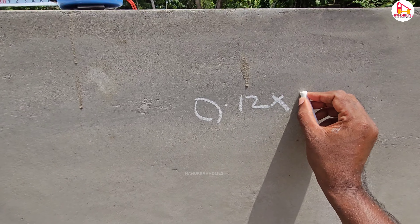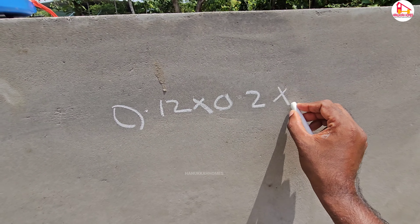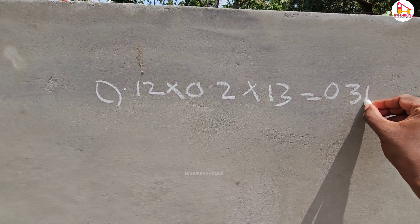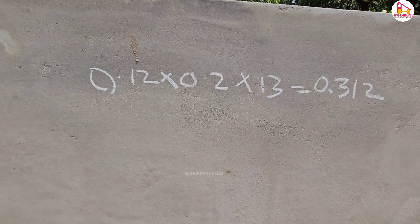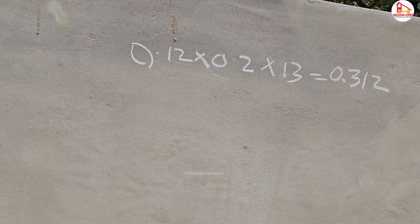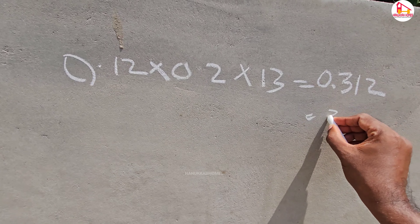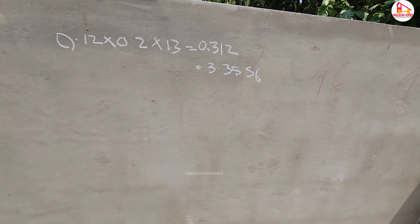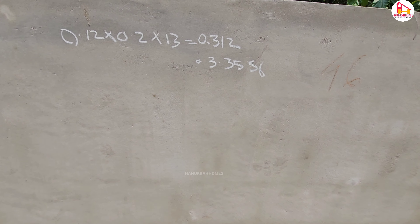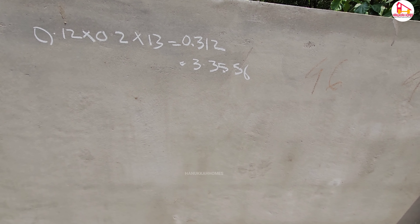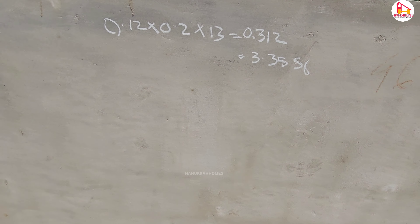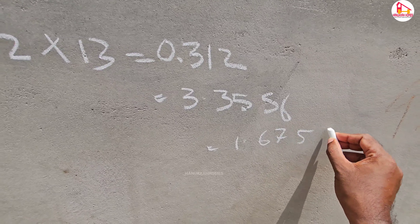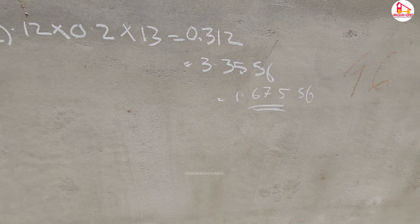The area is 0.12 x 0.2 and the area is 0.312. The area is 10.76 x 0.35 square feet — this is the top area on one side. The area is a half portion. The area is 1.675 square feet. It is a very negligible area.